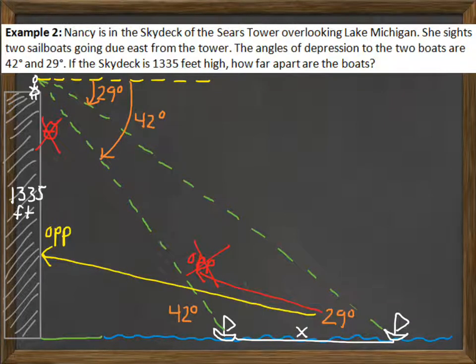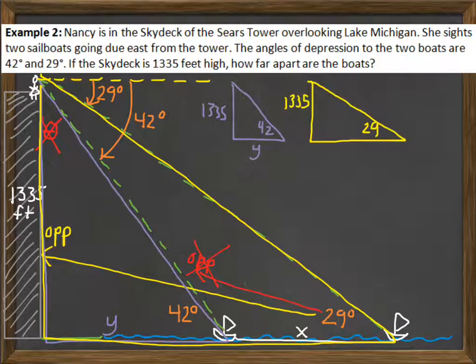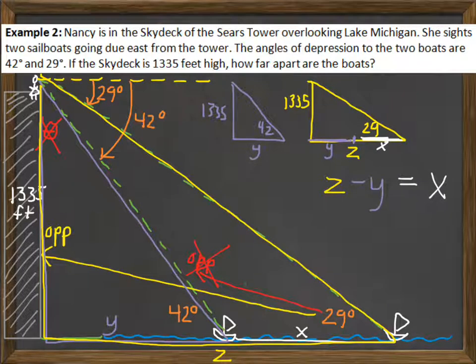From the 29 degrees, the opposite side is actually the tower. So you see, we're looking at two right triangles here. The first right triangle is formed between her and the first boat. It has a side of 1,335 feet high and a 42 degree angle. Let's call the base of that triangle Y. Then the second right triangle we have is the entire triangle, the big one. It still uses the tower as the opposite side, but it has a 29 degree angle. Let's call the base of that one Z. So the whole side Z is divided into parts Y and X. We're looking for X. So if I knew both Z and Y, I could find X. Because if I knew Z and I subtracted Y, I could figure out what the distance is between the two boats, which is X.